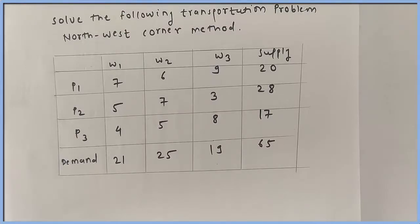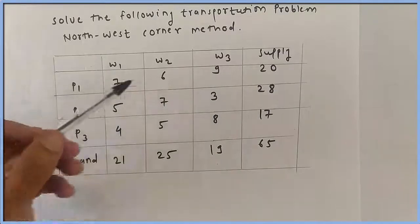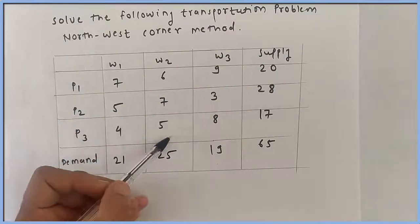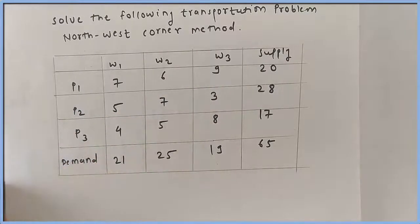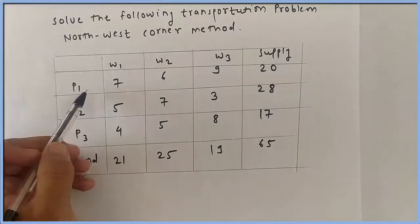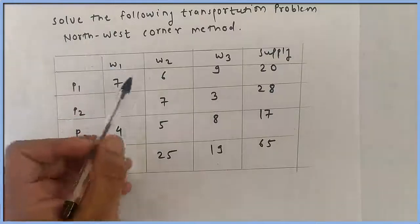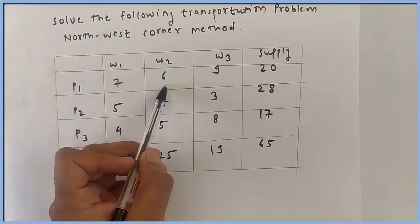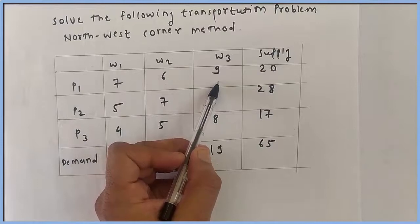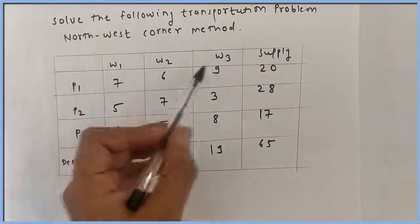Supply is equal to 65 and demand is equal to 65, therefore supply equals demand and this is a balanced transportation problem. The transportation costs per unit are: 7, 6, 9, 5, 7, 3, 4, 5, and 8. For example, 7 is the cost from P1 to W1, 6 is the cost from P1 to W2, and 9 is the cost from P1 to W3.